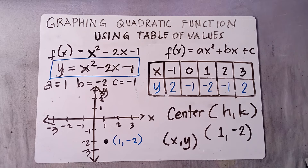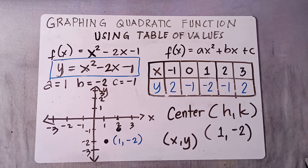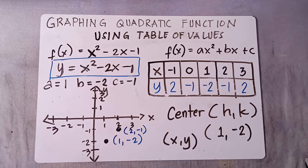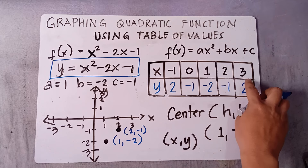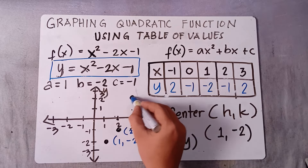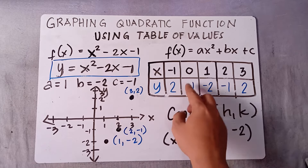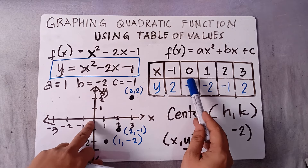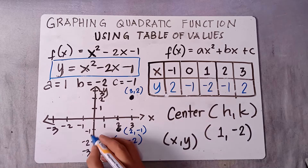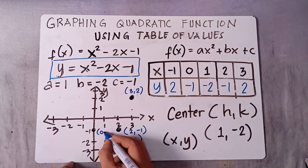Next, for (2, -1): move 2 units to the right and 1 unit downward. Then for (3, 2): move 3 units to the right and 2 units upward. For (0, -1): x is 0, so we start at the origin and move 1 unit downward. We label this point as (0, -1).